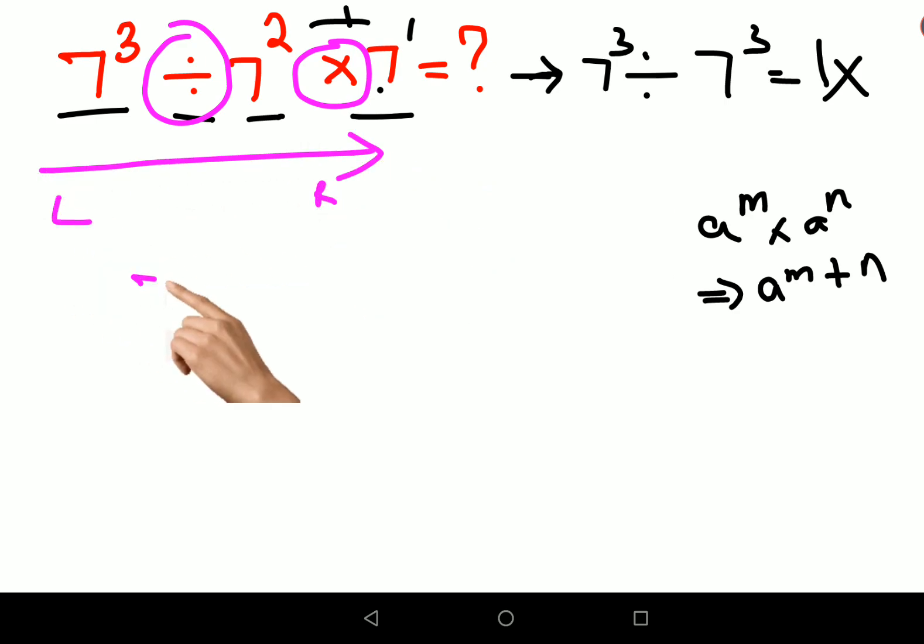So you have 7 cube. The division sign changes to multiplication, but the number that follows has to be written as a reciprocal. So 7 square becomes 1 over 7 square, and the rest is written as is.